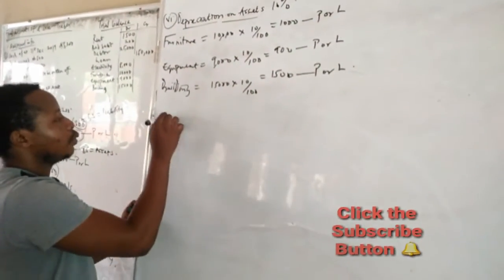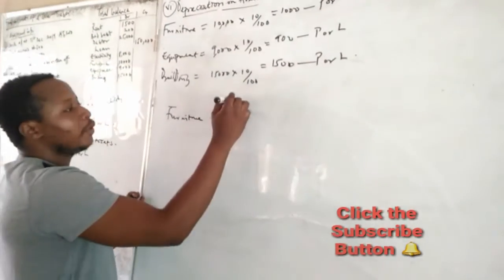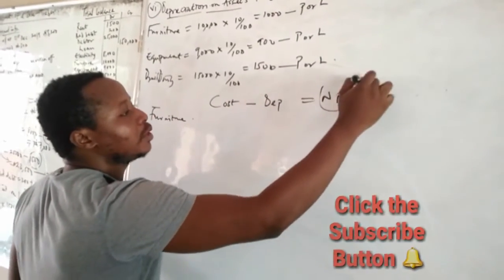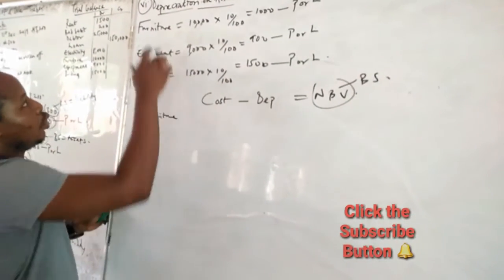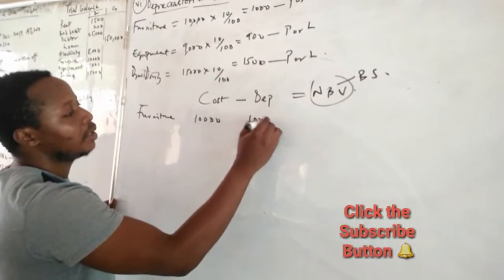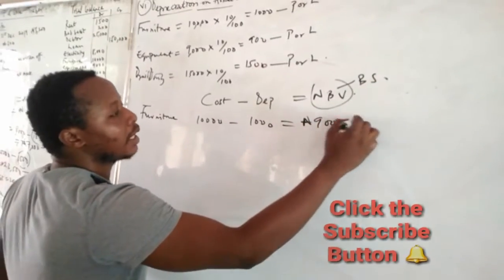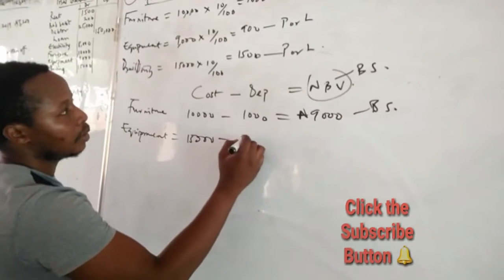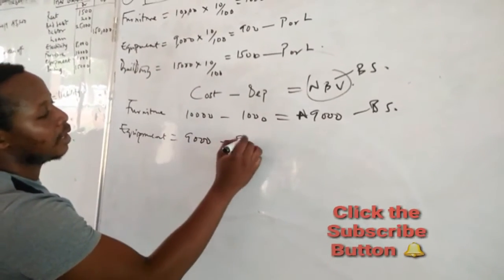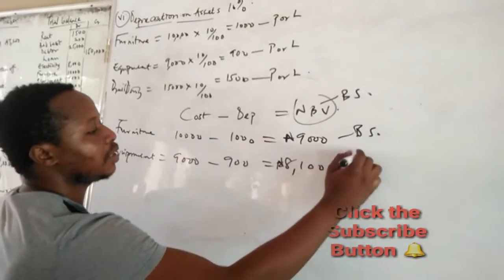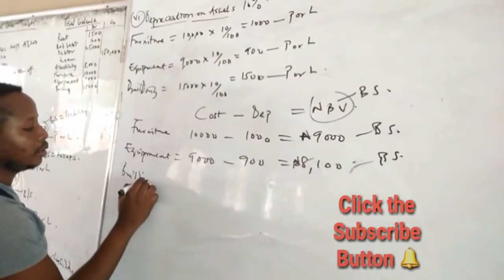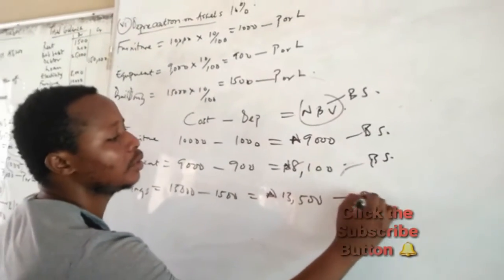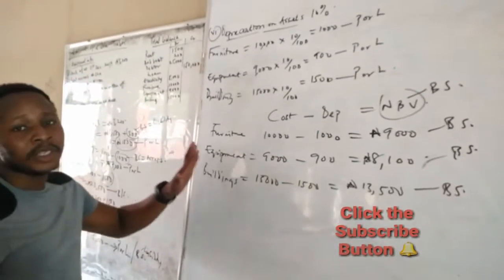For the balance sheet, you subtract the depreciation from the cost to get the net book value. Furniture: 10,000 − 1,000 = 9,000. Equipment: 9,000 − 900 = 8,100. Buildings: 15,000 − 1,500 = 13,500. These net book values are the figures that go into your balance sheet.